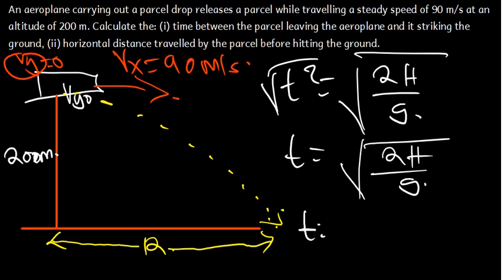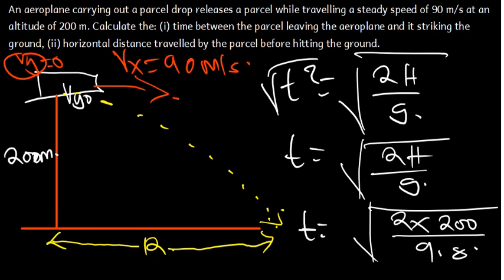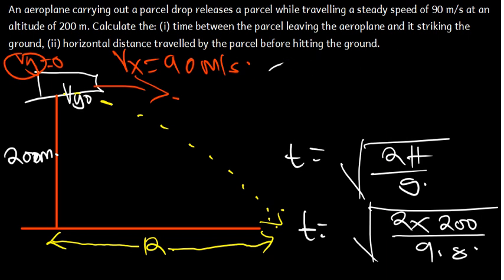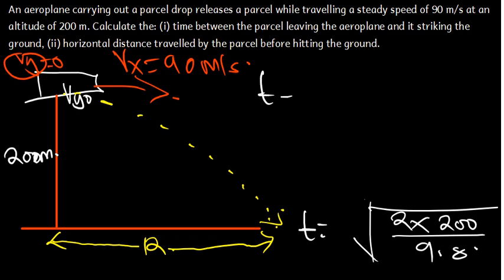Plugging in the values: t = √(2 × 200 / 9.8). The g is positive because the parcel is dropping toward gravity — when an object moves toward gravity, g is positive; when moving away from gravity, g is negative. Calculating: 2 × 200 = 400; 400 ÷ 9.8, then take the square root, gives t ≈ 6.39 seconds.